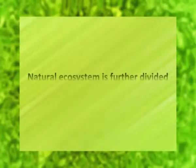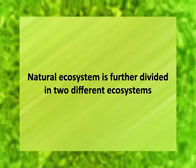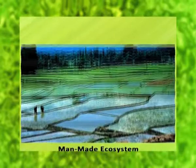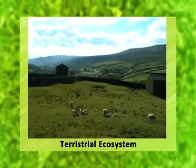Natural ecosystem is an ecosystem which operates by itself under natural conditions, without any major interference by man. Natural ecosystems are further divided into two different types: aquatic ecosystem and terrestrial ecosystem.